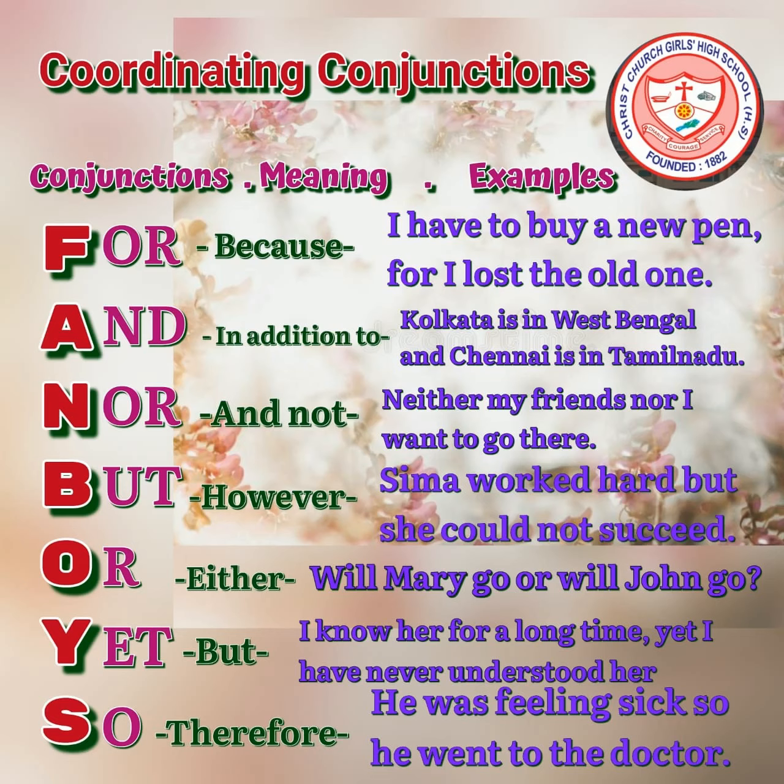Last in the row we have 'so,' meaning 'therefore' or 'for this reason.' The conjunction 'so' means something like 'therefore,' and we use it to join two clauses when the first clause is the reason for the second clause. For example: 'He was feeling sick, so he went to the doctor.' These are the coordinating conjunctions with which we join clauses to make a compound sentence.